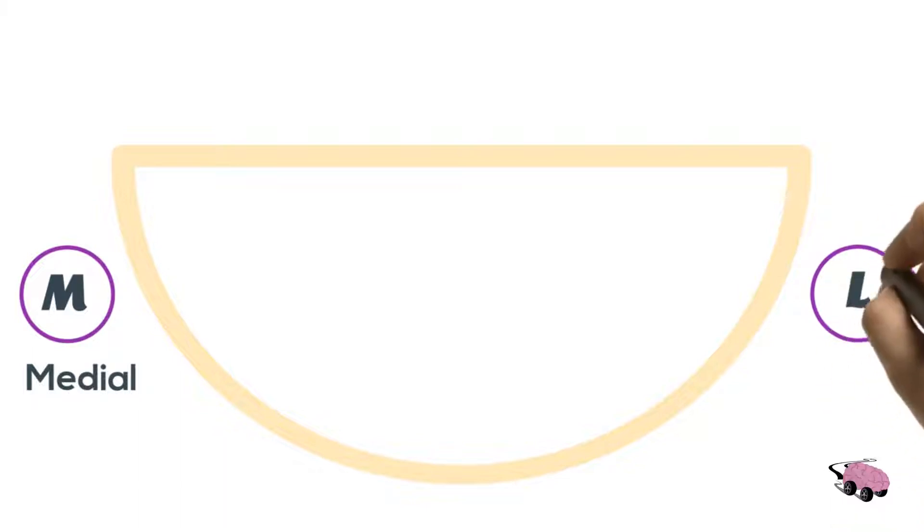We'll start by drawing a semicircle shaped figure. Next, we'll label this as medial and over here as lateral.